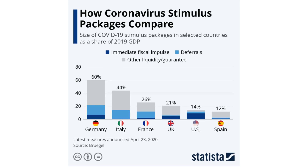The US has done 9.1% as per GDP in terms of their immediate impulse. Compare that to the second largest which is Germany at 6.9%. Then you've got 38.6% in other liquidity guarantees coming in from Germany on the top end, compared to just 2.6% in the US on deferrals. So it starts to paint a picture that the US has gone all in on immediate impulse — and remember a lot of this money won't get paid back. So who bears this cost? The taxpayer.